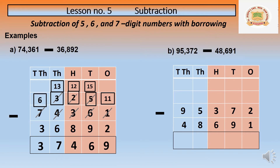In the ones place we are having 2 minus 1. We can easily minus because 2 is already bigger than 1. So 2 minus 1 is 1.